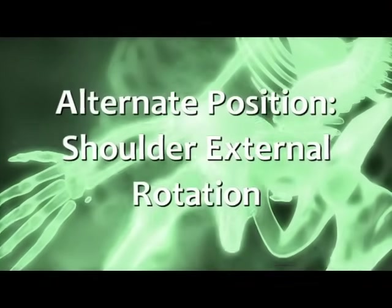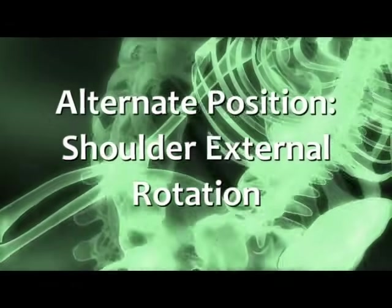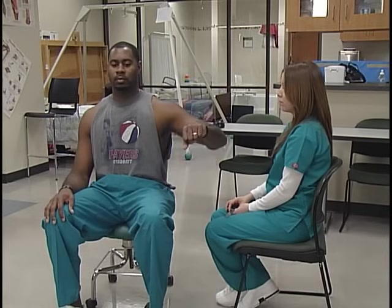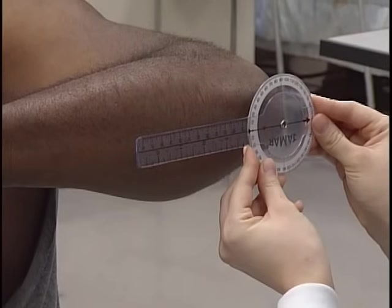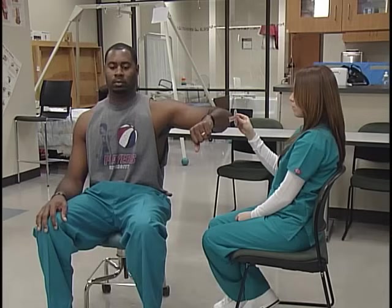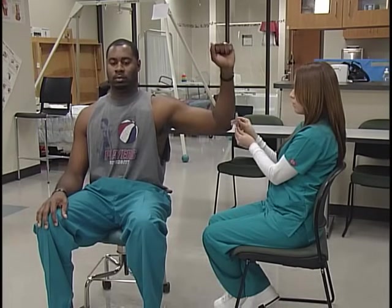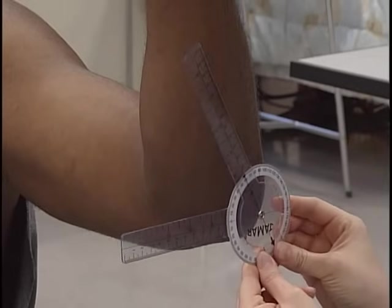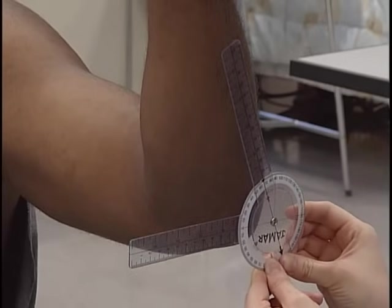For the alternate position to measure external rotation of the shoulder, the subject is seated with the humerus abducted to 90 degrees, elbow flexed to 90 degrees, and the forearm pronated. The axis of the goniometer is on the olecranon process of the elbow, and the stationary bar and movable bar are parallel to the forearm. The client's forearm is swung up gently, keeping the humerus parallel to the floor. The measurement begins at zero degrees and can range up to 90 degrees.